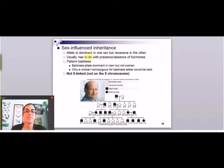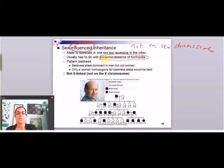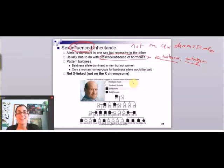Another interesting variation of Mendelian inheritance is sex-influenced inheritance. Note that it is NOT on sex chromosomes — if it's on a sex chromosome, it's called sex-linked. Sex-influenced inheritance has to do with the presence or absence of hormones, which are controlled by sex but not directly related to sex chromosomes. For example, breast cancer, even when there's a genetic component, is sex-influenced — a man who has the breast cancer genes will not usually get breast cancer because of the huge influence of estrogen.